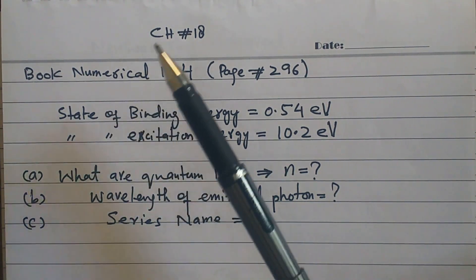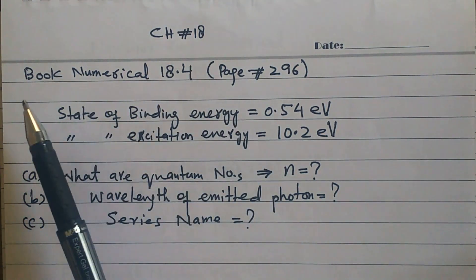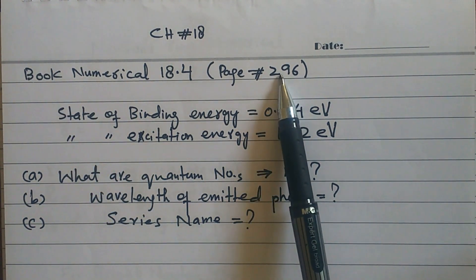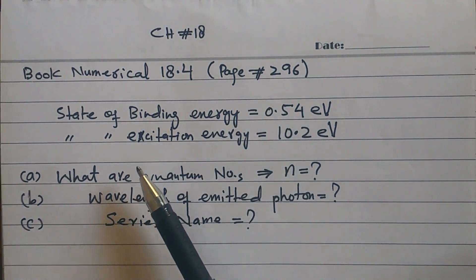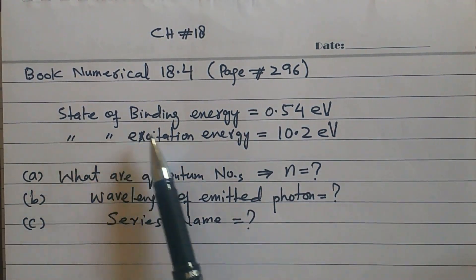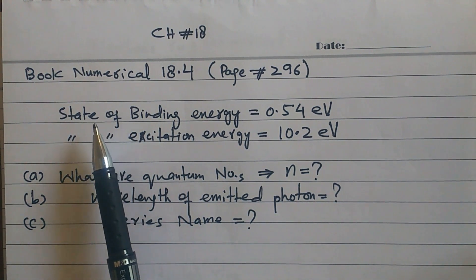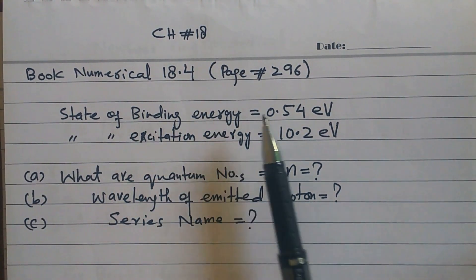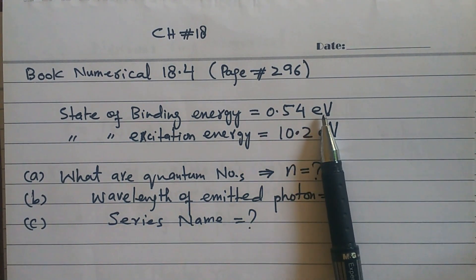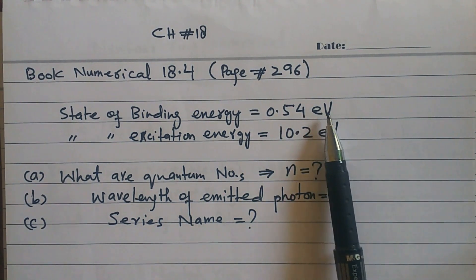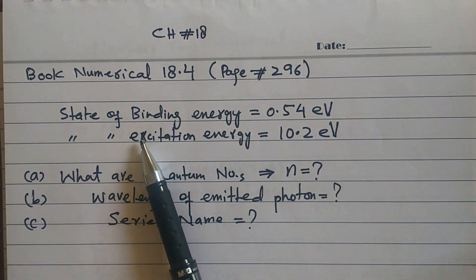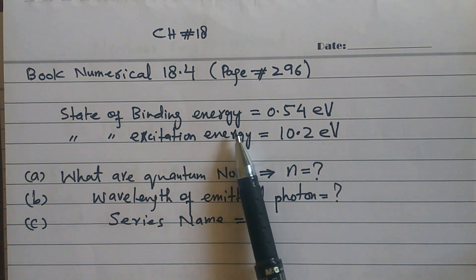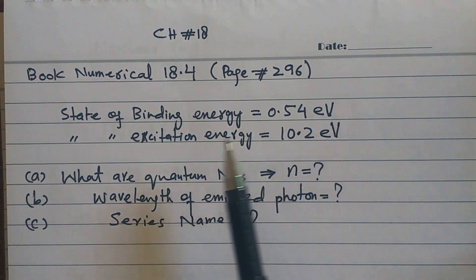In the name of Allah. Numerical 18.4, which is in the book on page 296. In this numerical, we have an atom which has a binding energy of 0.54 electron volts. We also have some energy which is in excitation — the excitation energy is 10.2 electron volts.